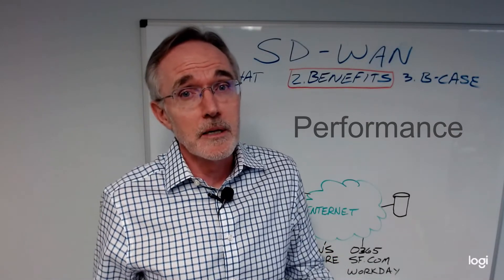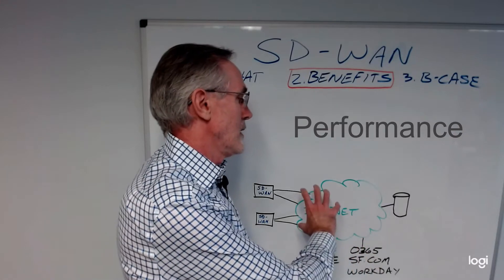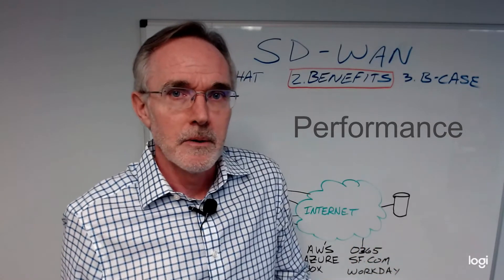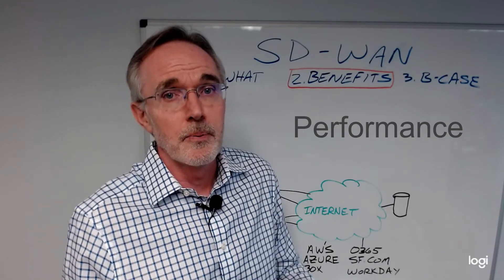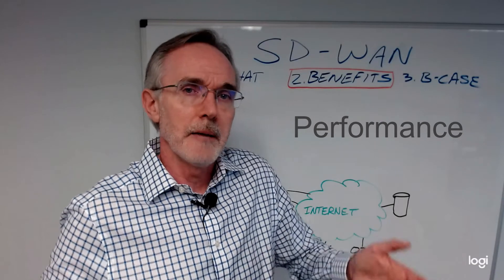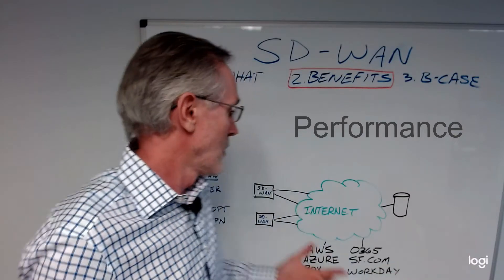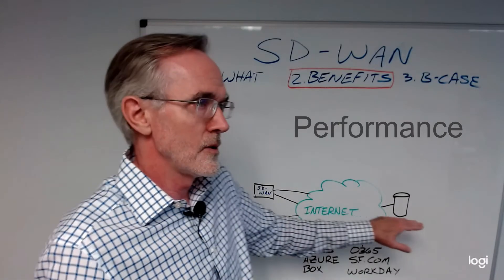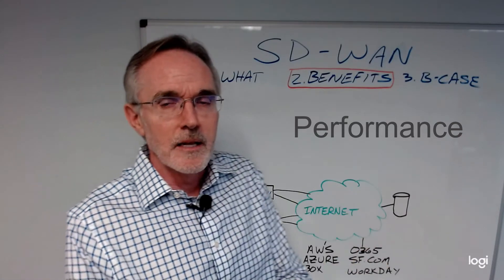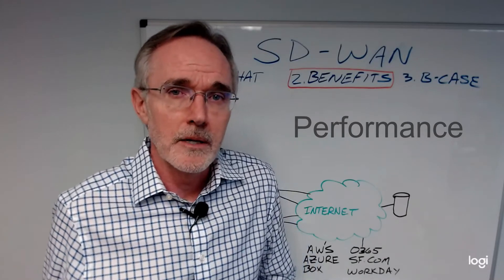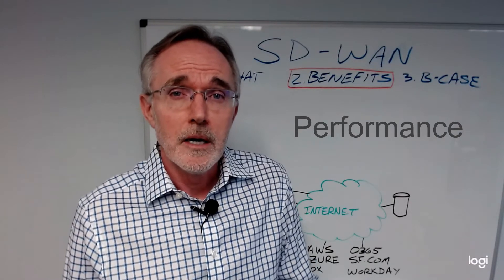SD-WAN can monitor and manage the quality of service on applications. Because we're generally using the public internet with SD-WAN, there's no guarantee of QoS. But there are SD-WAN service providers that can provide a private global backbone — fiber-based — that will accelerate your traffic as though it were on an MPLS or private network, so you can actually guarantee QoS in that middle mile. Many clients also choose to use an MPLS network for their very high-quality traffic, which can certainly support any QoS framework. So you have a lot of options with SD-WAN that you don't have with other networking strategies.